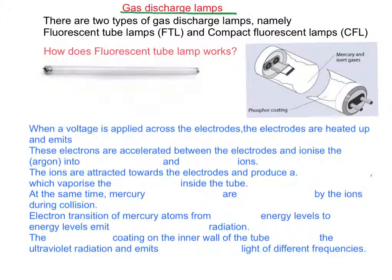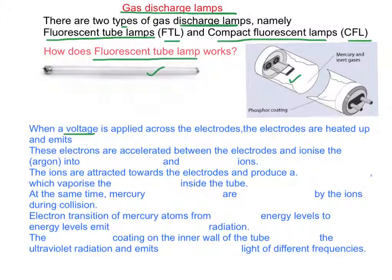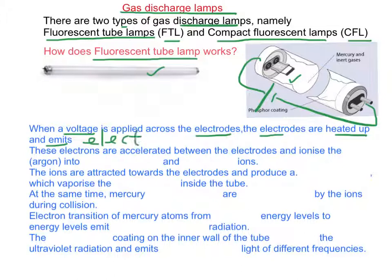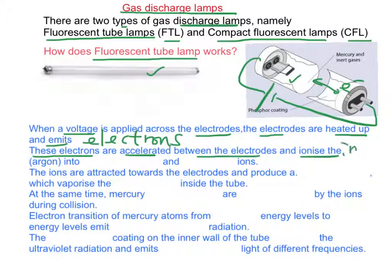Gas discharge lamps — there are two types: fluorescent tube lamps (FTL) and compact fluorescent lamps (CFL). When a voltage is applied across the electrodes, the electrodes heat up and emit electrons. These electrons are accelerated between the electrodes and ionize the inner gas inside — usually argon is used — ionizing it into positive and negative ions.